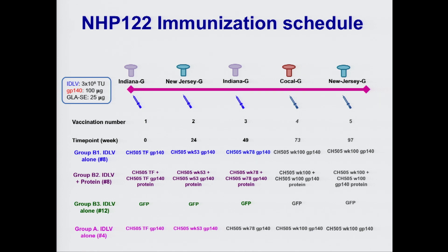Here I'm showing the NHP122 immunization schedule. This study employed a total of 32 animals divided in four groups. The first group of animals received IDLV alone, the second group received IDLV plus protein, and the control group received IDLV expressing GFP. We also have a fourth group of four animals receiving IDLV alone that will mainly be used for safety studies.